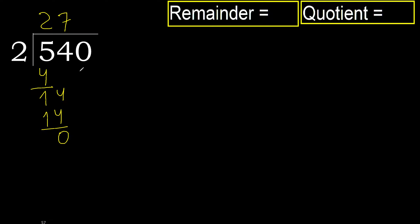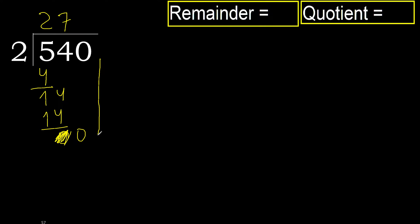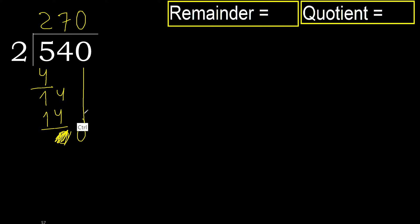Subtract. Next: eliminate 0 on this side. 0 is less, therefore next — there is no number, therefore finish it. Here, always complete with 0, complete with 0, because here finish it with this number. Therefore complete.